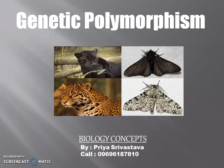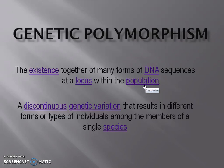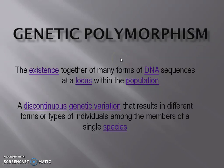There is the introduction of genetic polymorphism. The existence together of many forms of DNA sequences at a locus within the population, or you can say existence of two or more than two morphs. A morph is the form or phenotype in the same species, within the same population, and at the same time. So three points to remember: same population, same time, and same species.